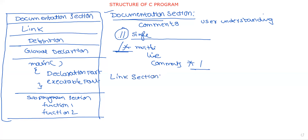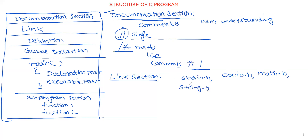The link section: we already know C has some predefined built-in libraries and functions, that means header files. For example, for input and output we have the header file stdio.h, for clearing the screen we have conio.h, for mathematical functions we have math.h, for string functions we have string.h. We have many predefined header files, and each contains many functions.